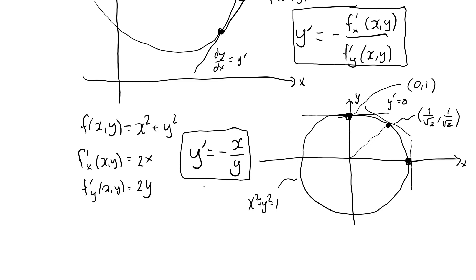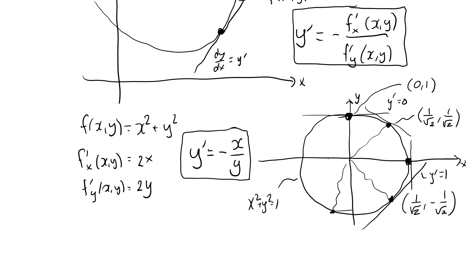Let's do one more. The point on the negative 45-degree line has coordinates (1/√2, −1/√2). According to our formula, y prime should be minus (1/√2) over (−1/√2), which equals plus 1. So y prime equals 1. If I want to find the slope of the circle at any arbitrary point, all I need to do is find the x coordinate and y coordinate and calculate the ratio minus x over y.